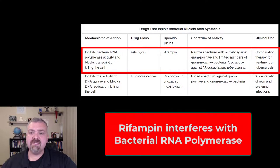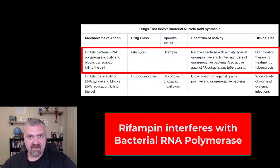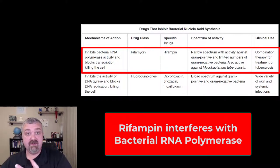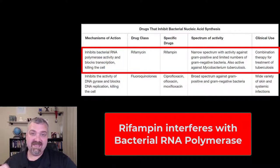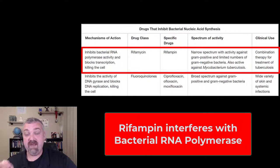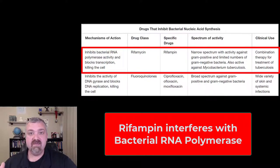As far as how it works, it actually interferes with RNA polymerase, which is an enzyme that allows bacteria to turn DNA into RNA. We have RNA polymerase as well, but they're structurally different. So rifampin should only impact the RNA polymerase of bacterial cells and not ours, making it a good selectively toxic drug.